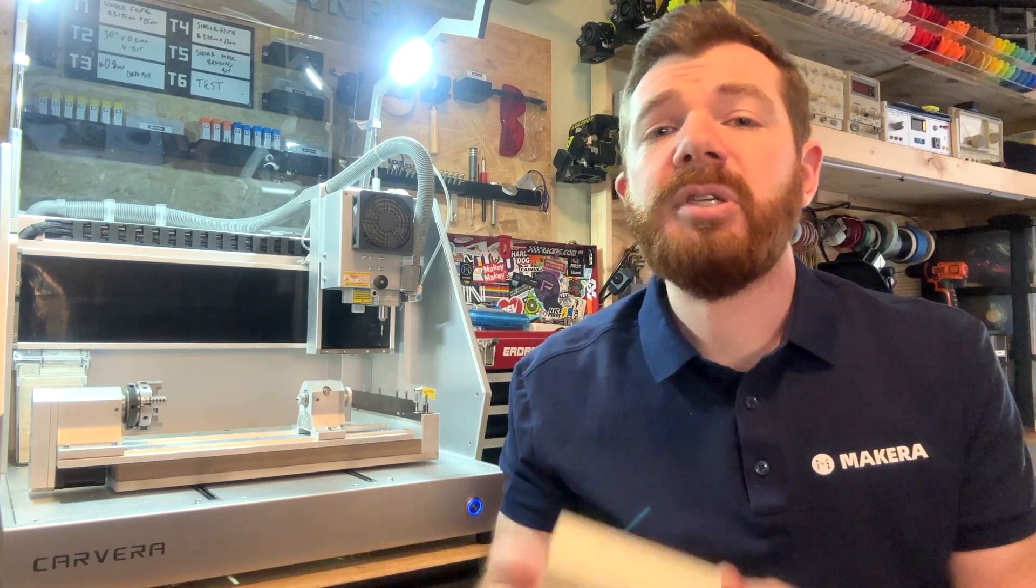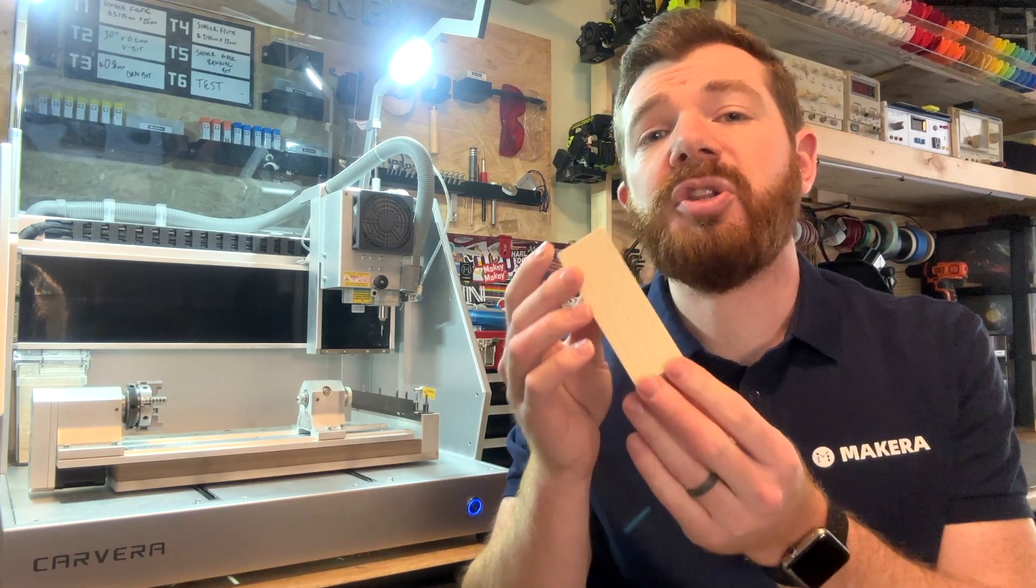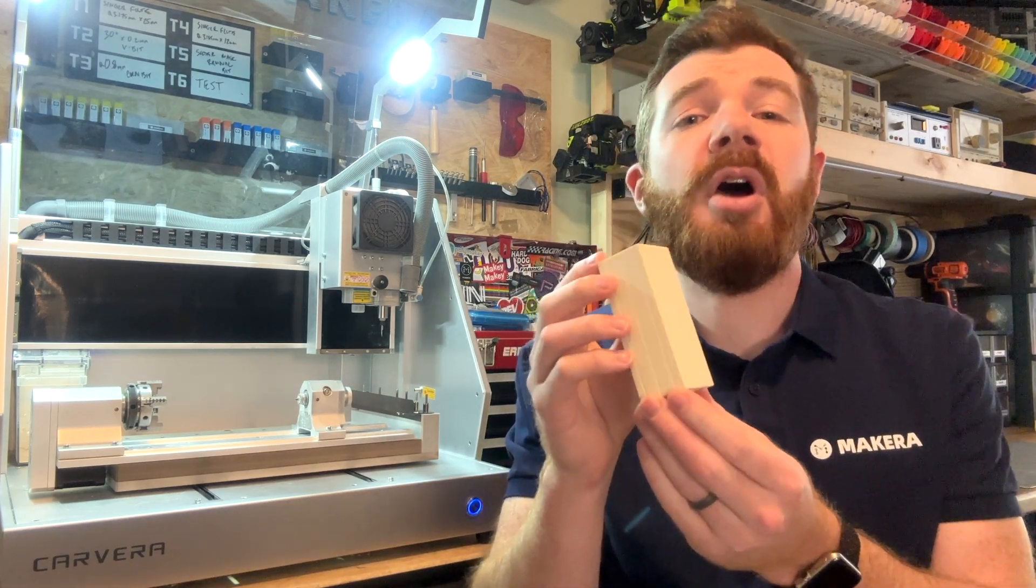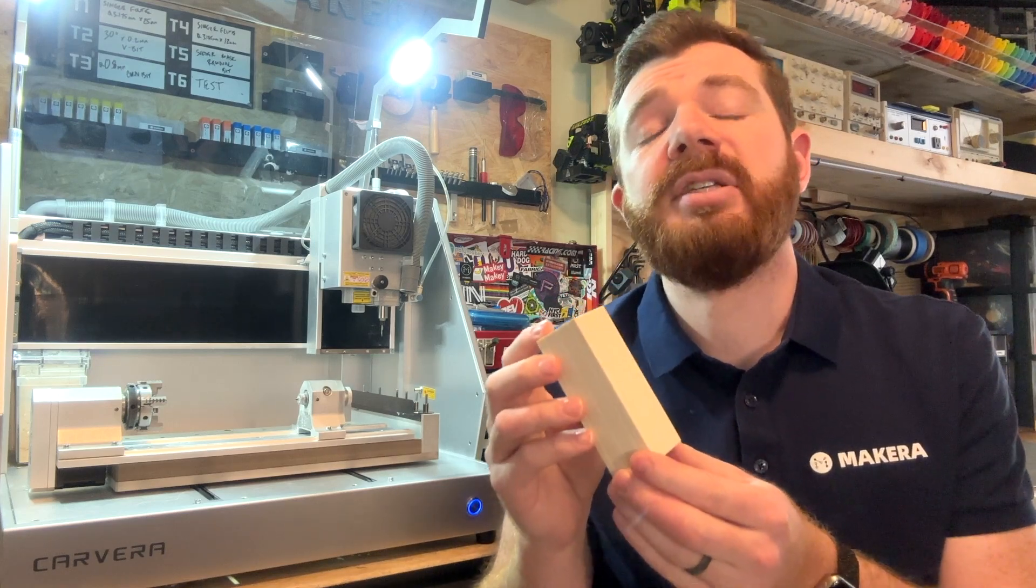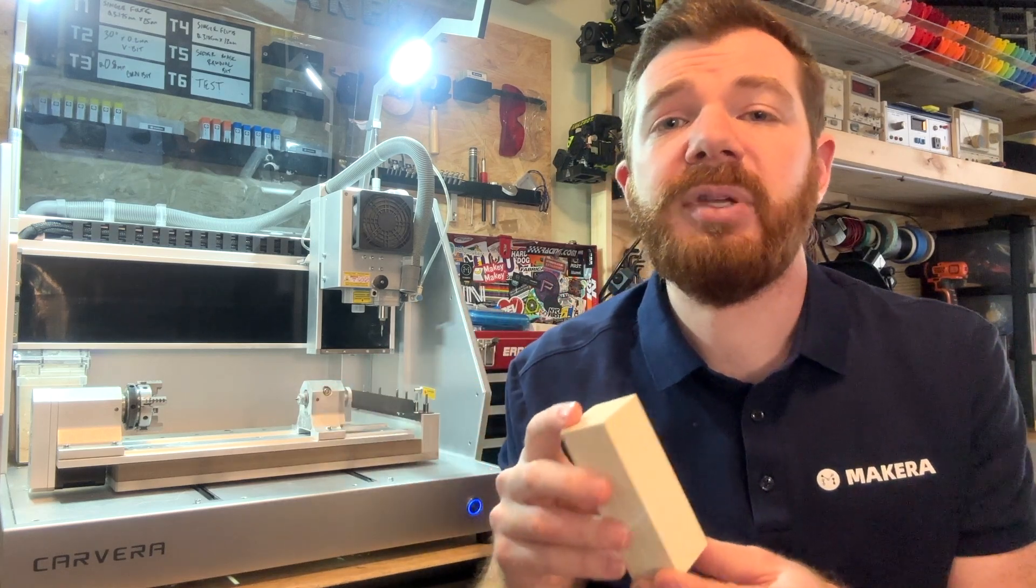Next we need to secure our stock. For the fourth axis relief project we're going to be using a piece of epoxy tooling board which is 35 by 35 by 100 millimeters, and we're going to secure it into the fourth axis module in the default chuck position.